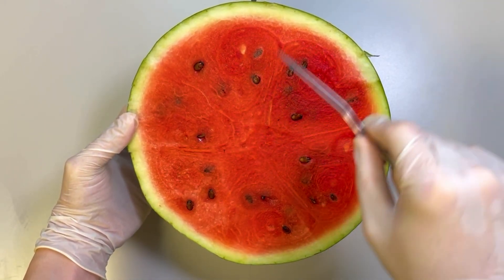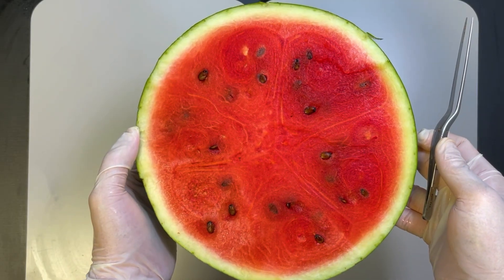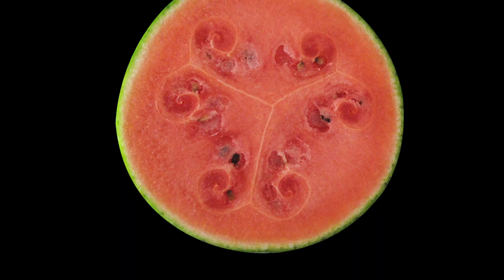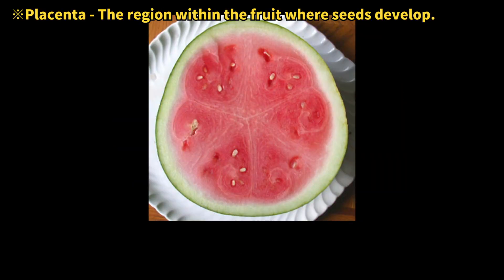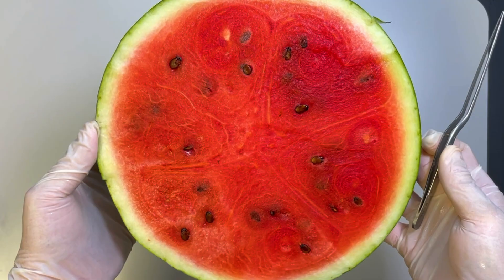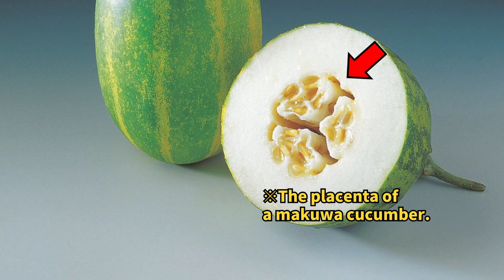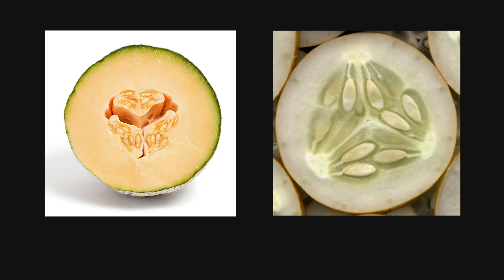When you slice a watermelon crosswise, a peculiar pattern emerges on its cross section. Embedded within the watermelon's lateral cross section is a spiral-like design. This intricate pattern originates from the embryo within the female flower cluster — specifically where the hypocotyl once attached and where the fruit seeds develop.